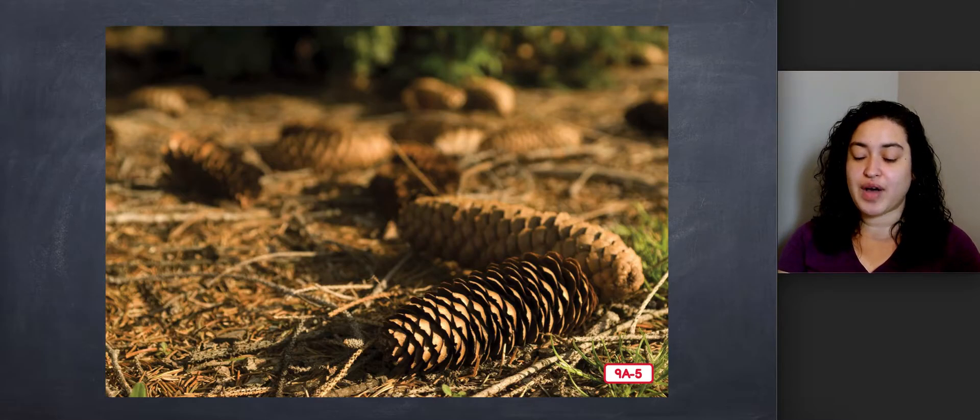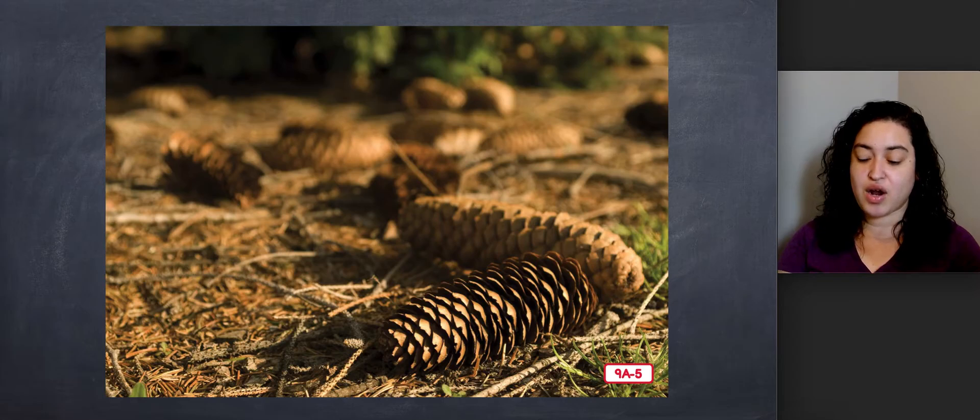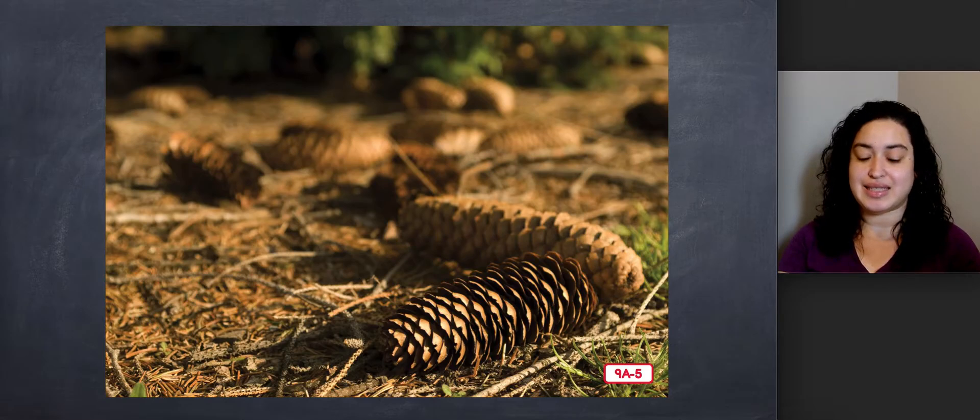Wherever you find evergreen trees, you are also likely to find these things scattered around on the ground. If you look up while standing under an evergreen tree, you might see some of these growing on the tree's branches. They are called cones. Cones are the parts of some evergreen trees that contain the seeds.